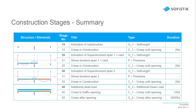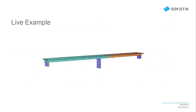All this information can be organized into a summary table. Stage 10 covers the substructure; stage 20 activates span 1 including the cantilever; stage 30 activates span 2 superstructure; and from stage 40 onward, additional dead loads, creep to opening, and creep after opening are applied. Now let's look at the live example in SOFI+.